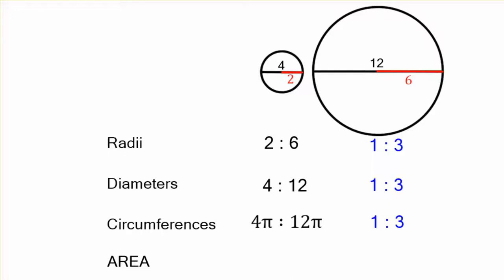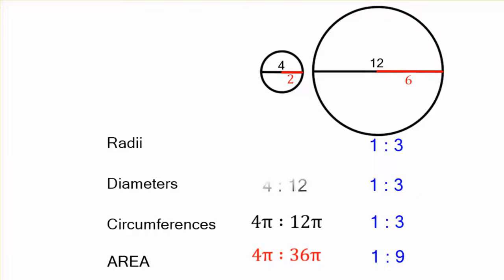They're always 3 times longer, but the area will be different. It's pi r squared, pi times 2 squared, pi times 6 squared. That's 4 pi to 36 pi. That's not 1 to 3. It's 1 to 9. 1 squared to 3 squared.